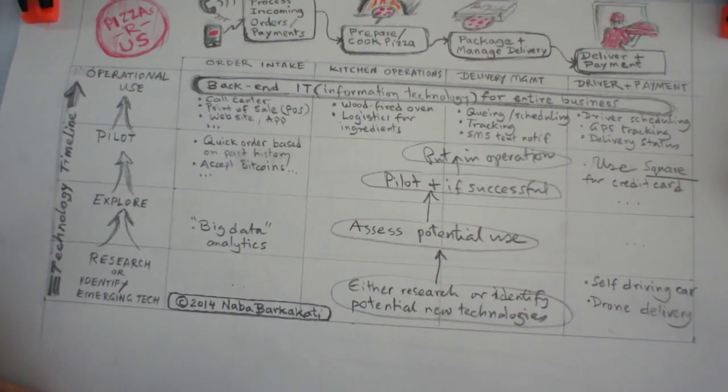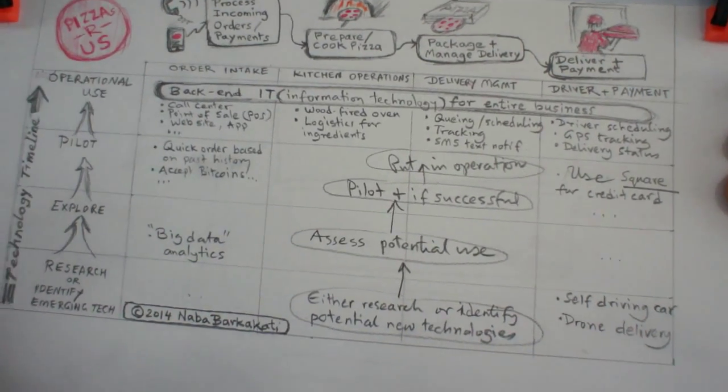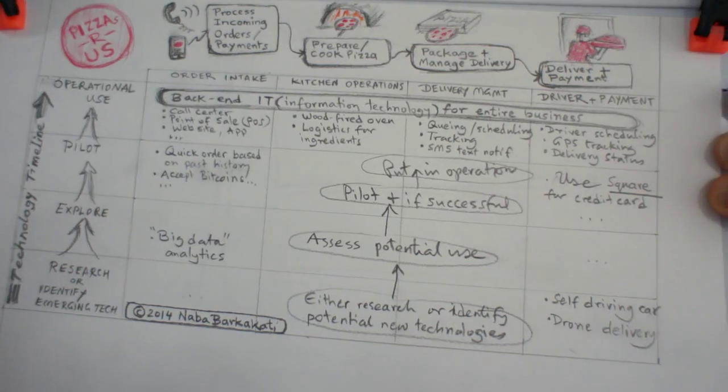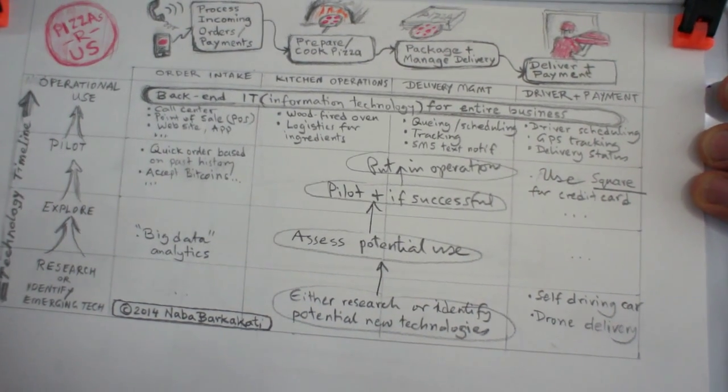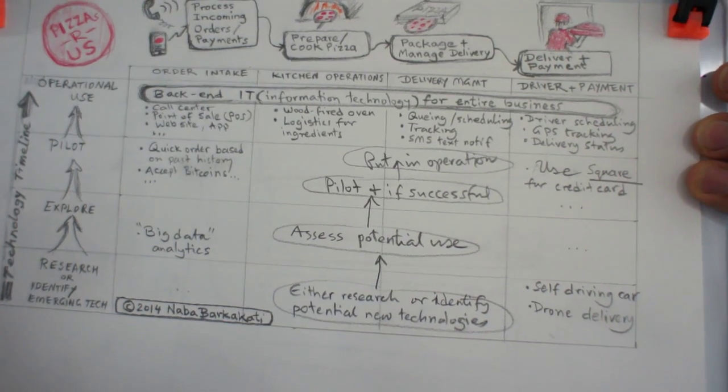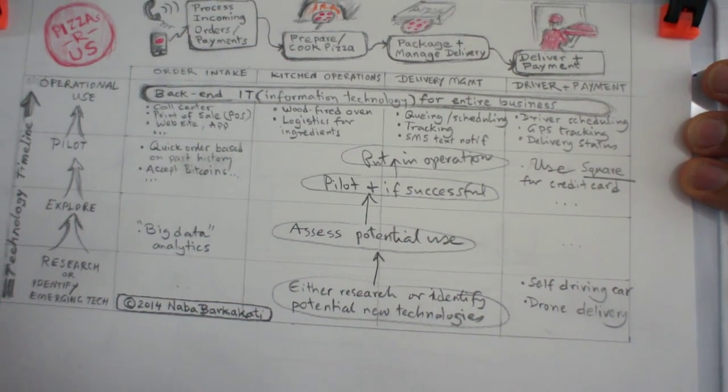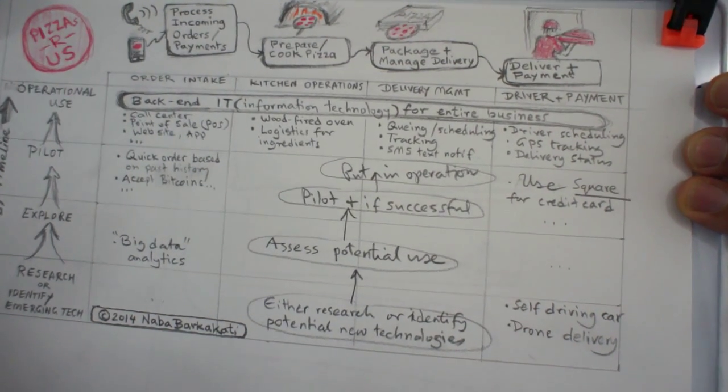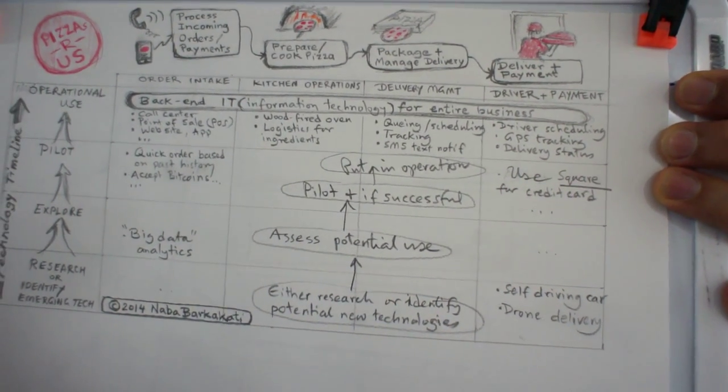So, first I would suggest that you lay out this list of processes that are going to be important to your business. Now, whether it's your small business or a huge, large conglomerate, you are going to probably be able to do this for any business that you can think of. And just that the number of processes and the details might be different.